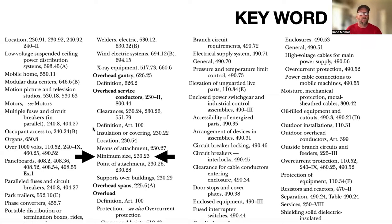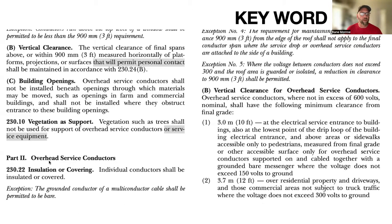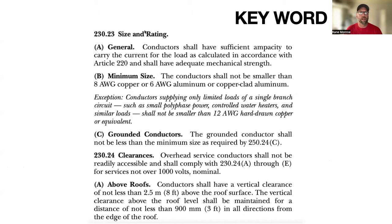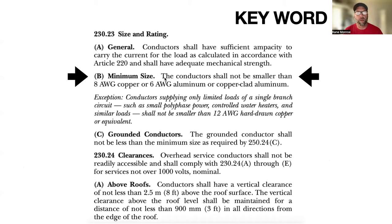Now we take that and go to Article 230, Part 2 — that's the overhead service conductors, which is what was asked in our question. We go to 230.23, 'Size and Rating' — that's what the index directed us to. And then we look down and 230.23(B) is 'Minimum Size,' which reads: the conductor shall not be smaller than 8 AWG copper, or 6 AWG aluminum or copper-clad aluminum. Keep in mind that when testing, everything is usually copper unless stated as aluminum. Also note there are exceptions listed — some questions will have answers pulled from the exceptions.